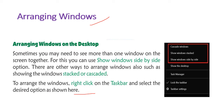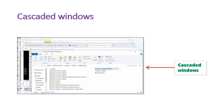In Cascaded Window view, we can see how many programs are running. All programs are arranged with their title bars visible one behind another. You can see which program is open, and click on any title bar to bring that program to the front. This is called cascaded window arrangement.